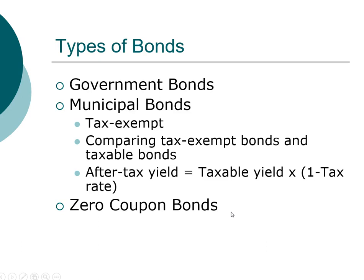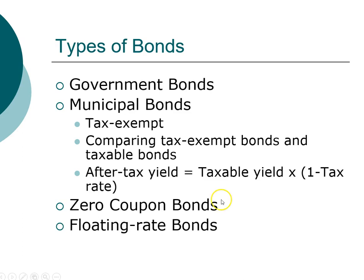Another important characteristic of bonds is the type of coupon. It can range from zero-coupon bonds, which sell at a very deep discount, to bonds that pay at the market rate. On the other extreme is the floating rate bond, where the coupon rate can actually change over time. For floating rate bonds, the coupon rate is typically tied to a well-known index such as the prime rate or the London Interbank Offered Rate (LIBOR).